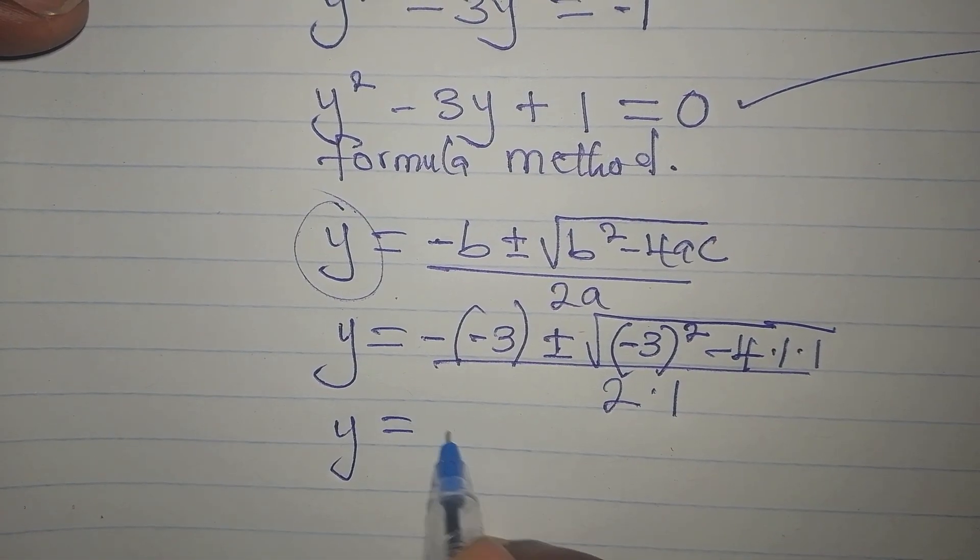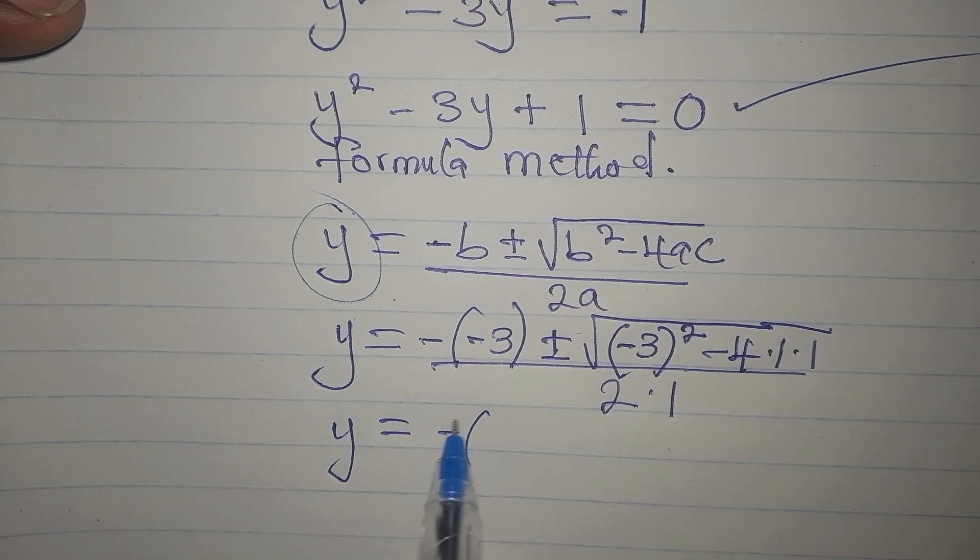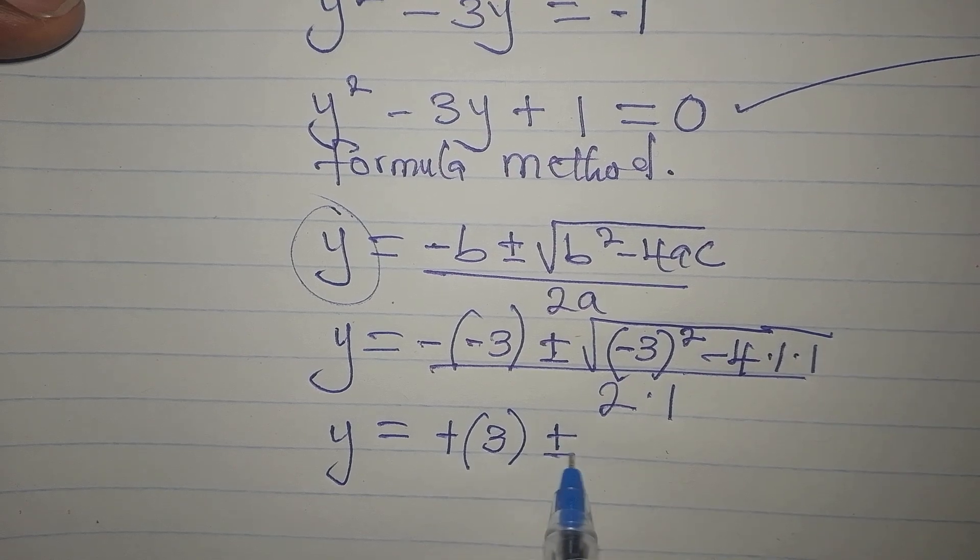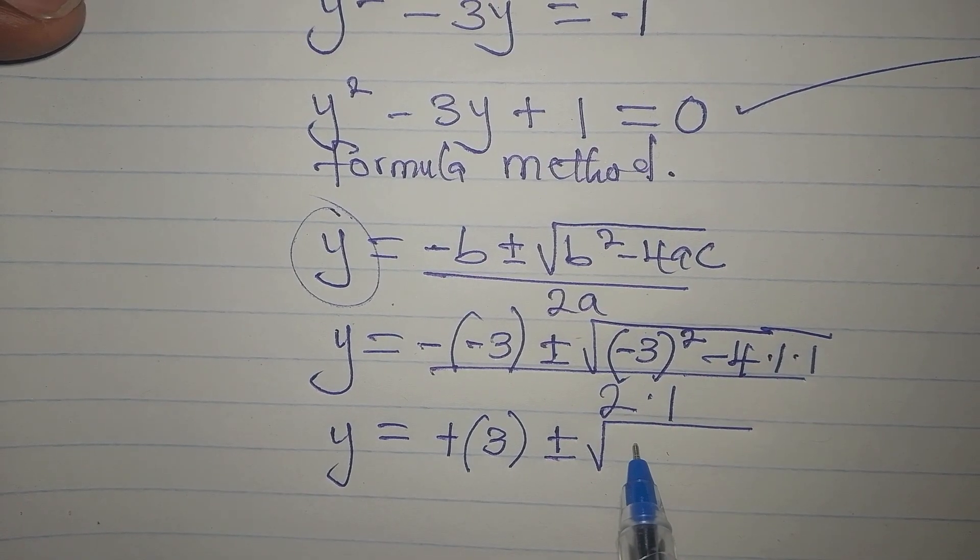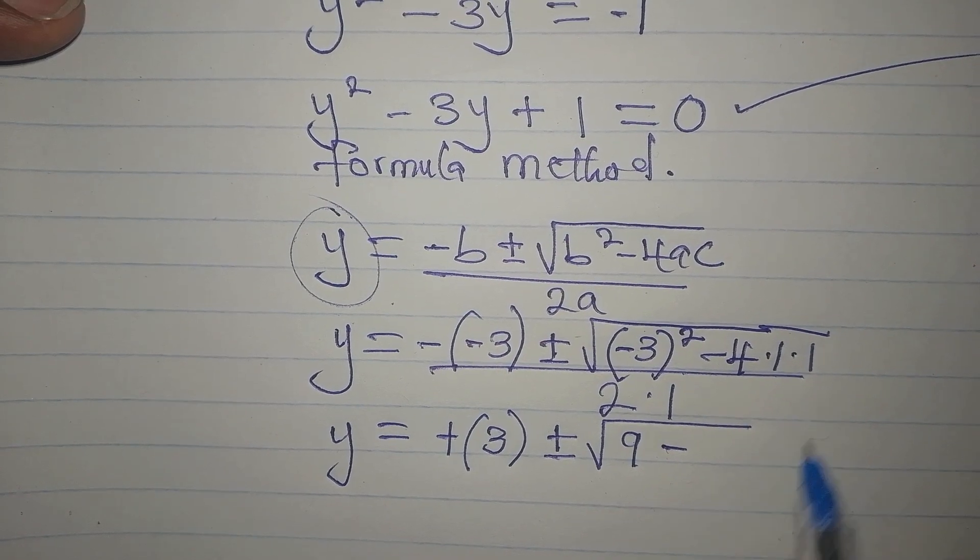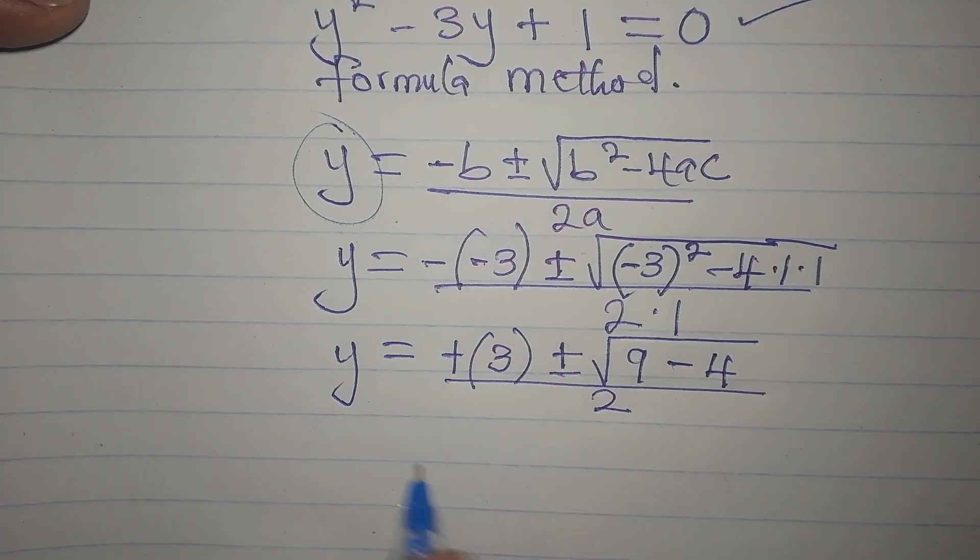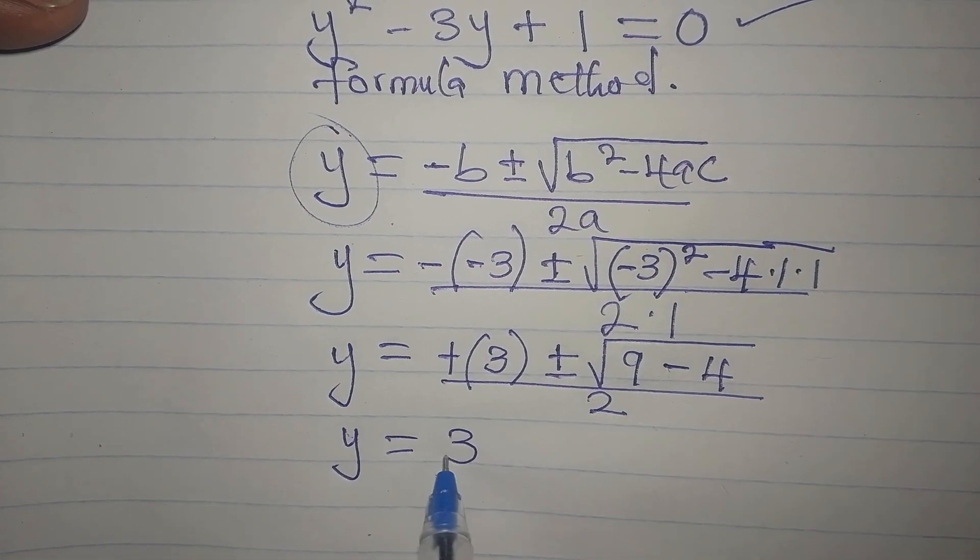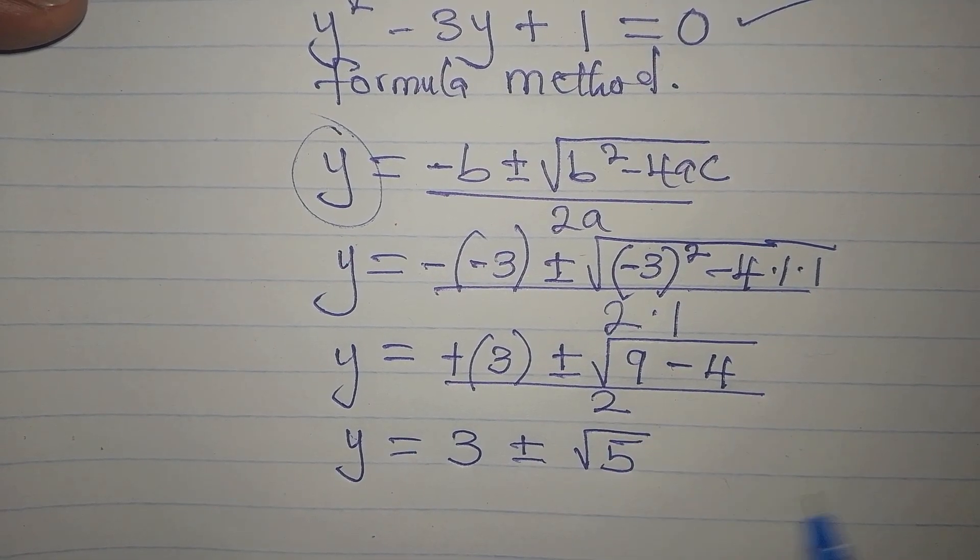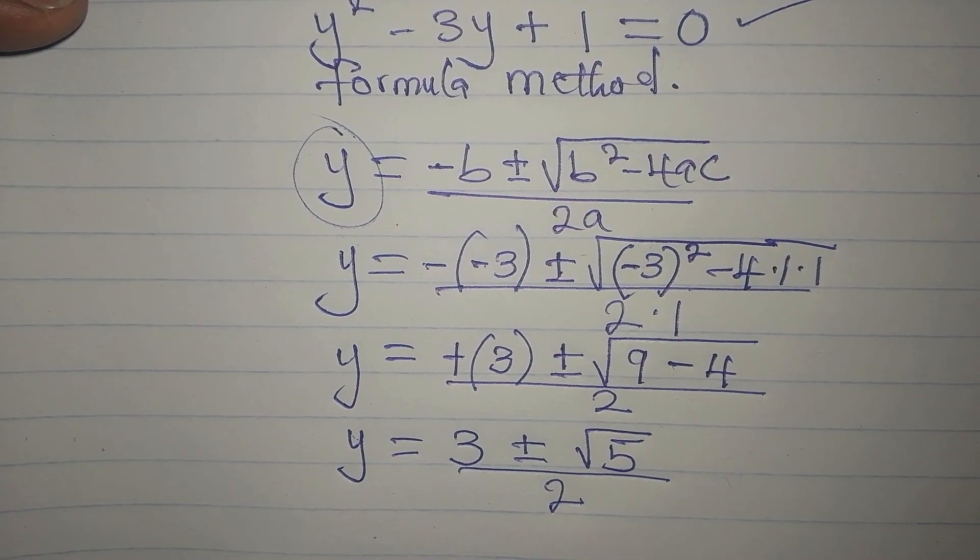Now, minus minus will turn to positive. So let me just have 3 in this bracket. Then we have plus or minus minus 3 squared is positive 9. Then minus 4 times 1 times 1 will give us 4. Then we divide this by 2. y is 3 plus or minus the square root of 5. 9 minus 4 is 5. Then we divide by 2. This is a 2 in 1 solution.